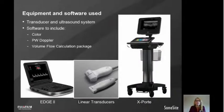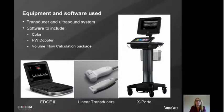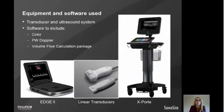The equipment needed to perform volume flow measurements includes an ultrasound system with a transducer, and software to allow colour Doppler, pulse wave Doppler, and volume flow calculations. These software packages aren't always included in the standard bundle, so when comparing systems make sure to check that all of these features are included or request them as add-ons.